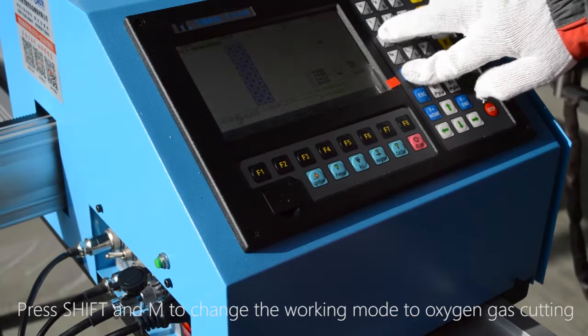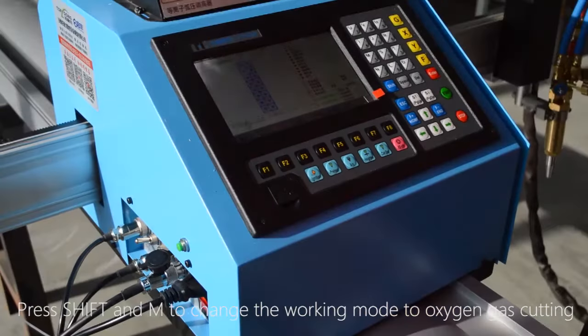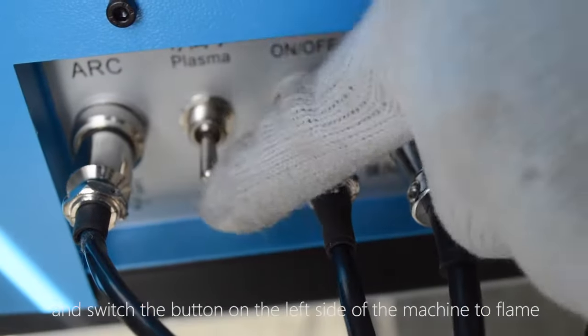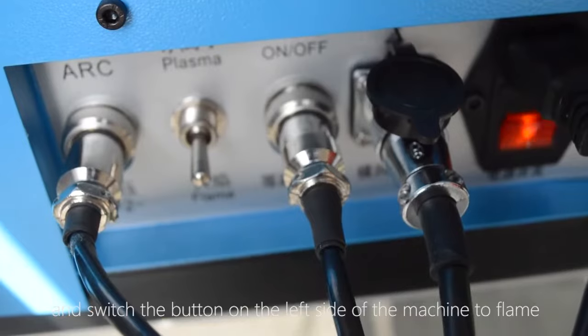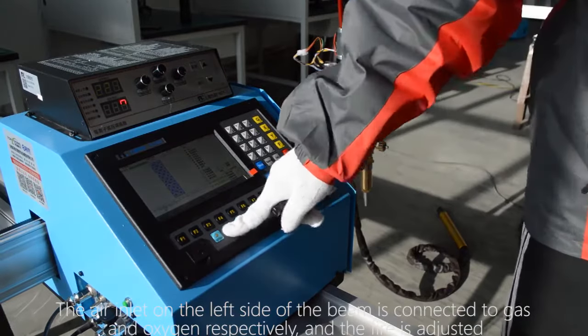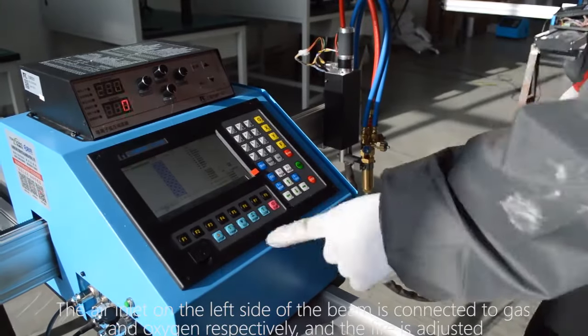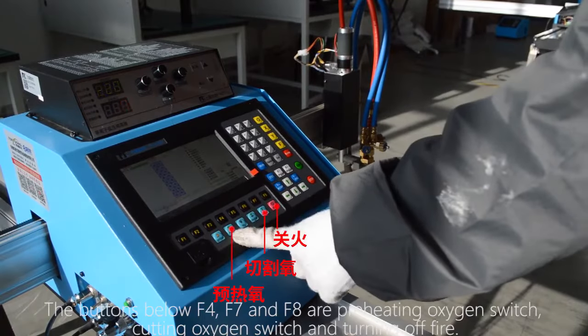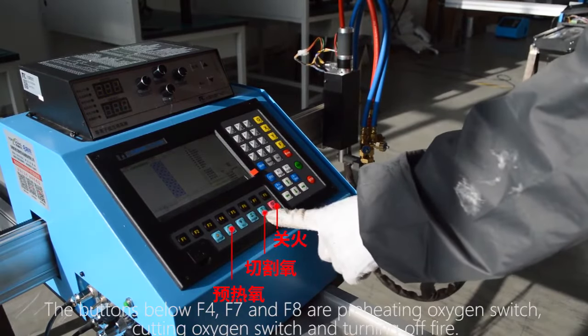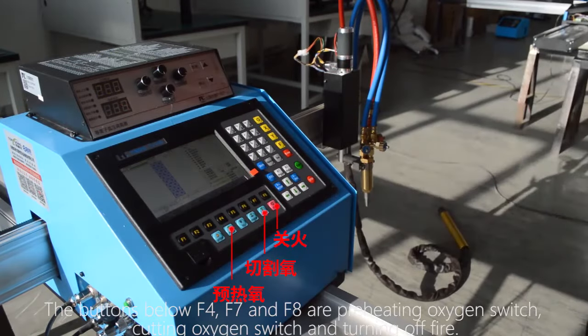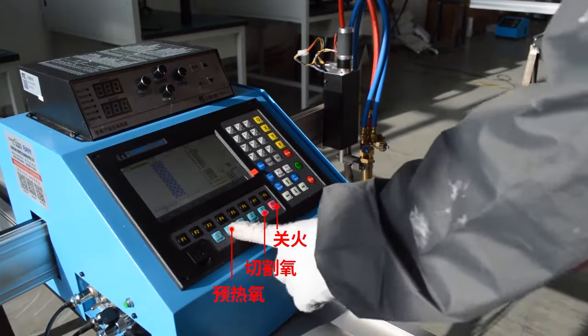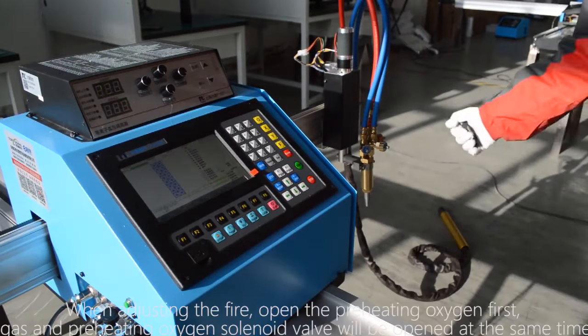Press SHIFT and M to change the working mode to oxygen gas cutting and switch the button on the left side of the machine to flame. The air inlet on the left side of the beam is connected to gas and oxygen respectively and the fire is adjusted. The buttons below F4, F7 and F8 are preheating oxygen switch, cutting oxygen switch and turning off fire.